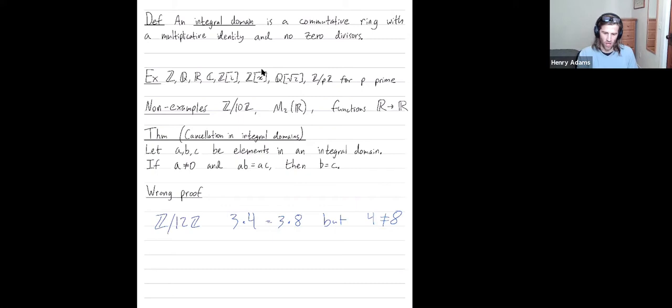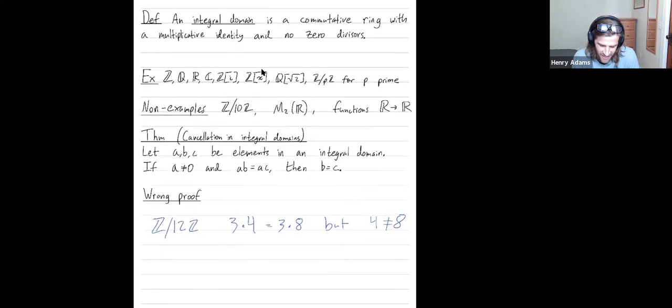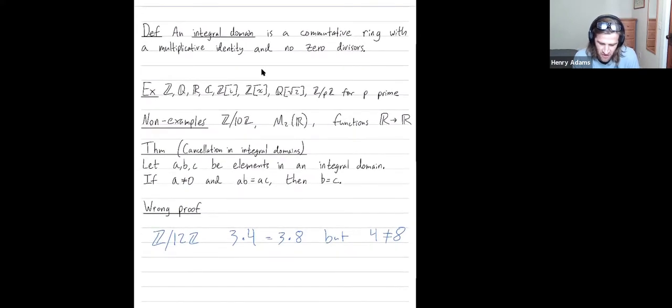Integral domains are a certain type of ring. I'm just saying the word because you'll hear the word later in your mathematical life, but you don't need to like the word. Integral domains are commutative rings with no zero divisors. So I never have x times y equals zero unless one of x or y are zero.